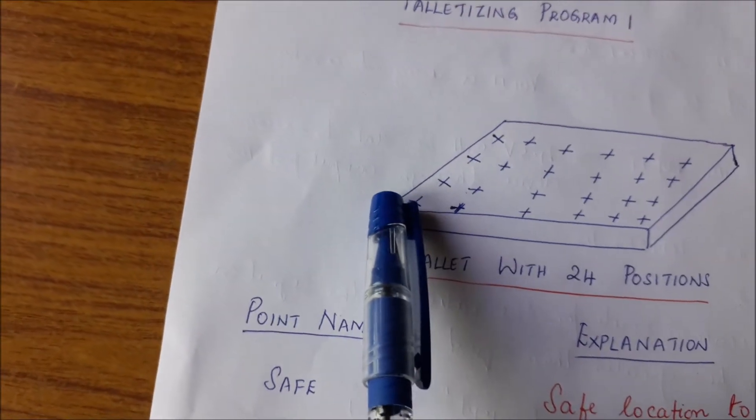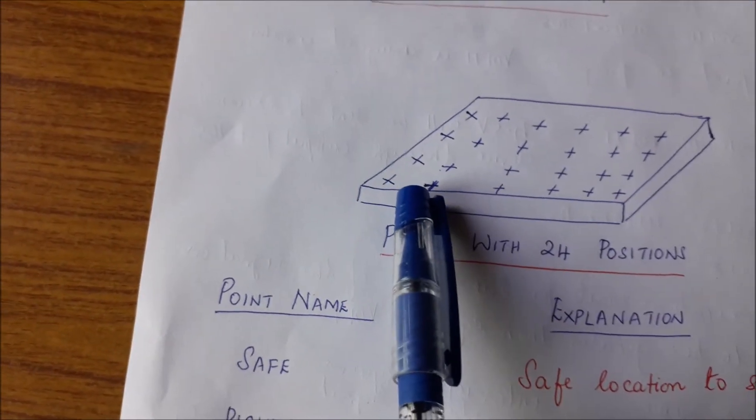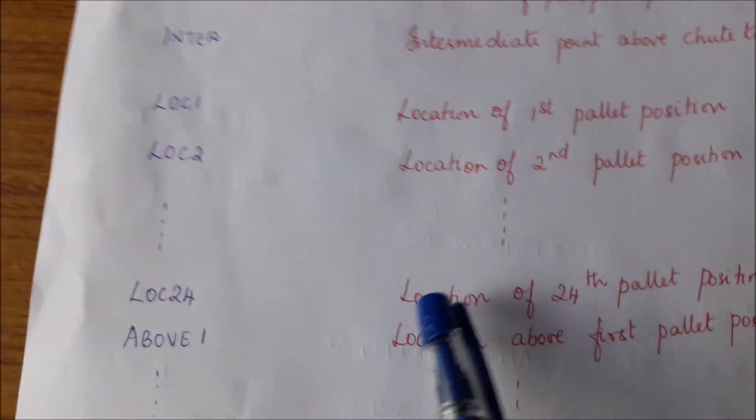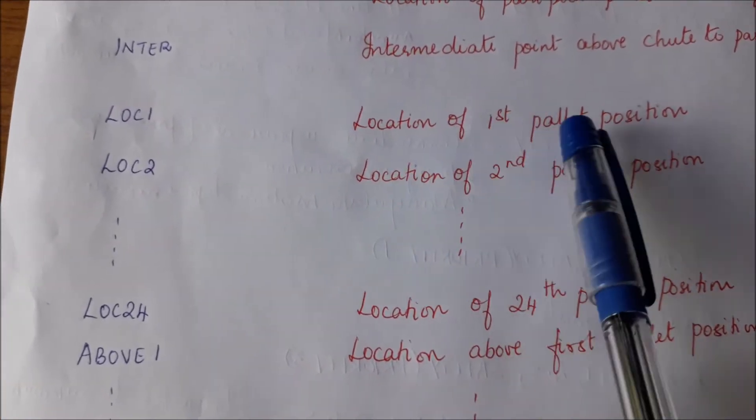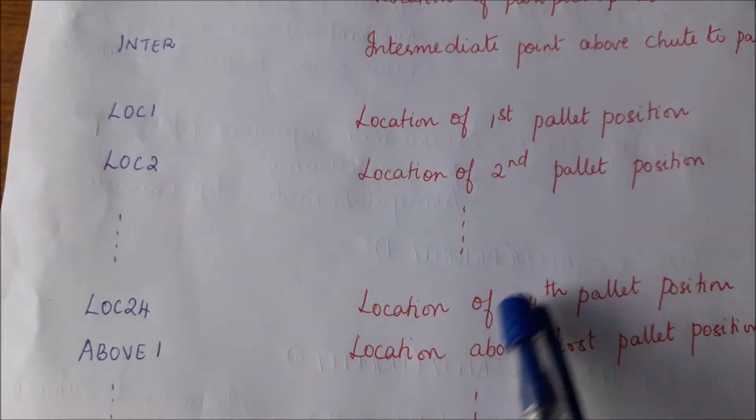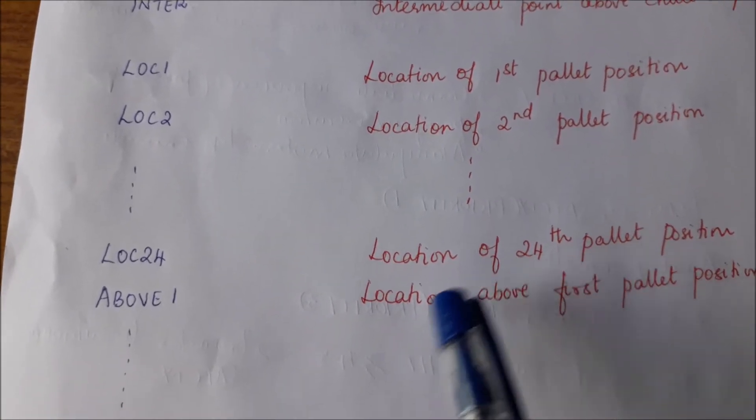Location 1. Now in this, this is called location 1. Let us say this is location 2, location 3, location 4. So each of these 24 locations are location of the first pallet position, location of the second pallet position up to the 24th pallet position.